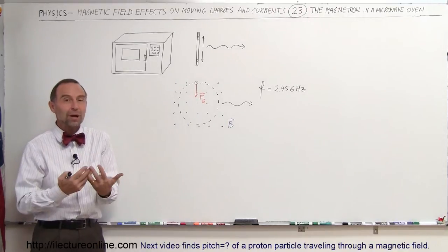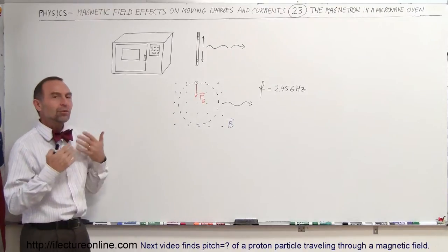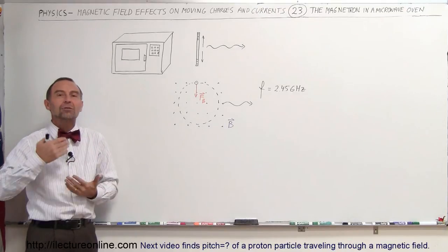They need to produce microwaves. Microwaves is an electromagnetic radiation. And how do we produce electromagnetic radiation? Typically we do that by making electrons accelerate.